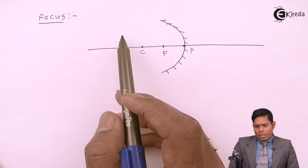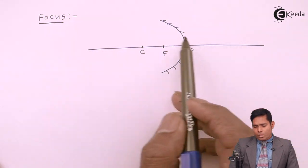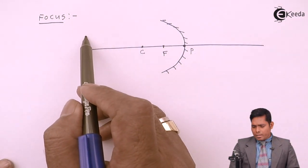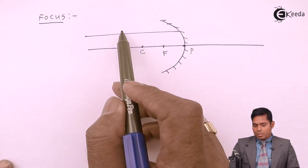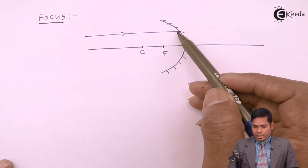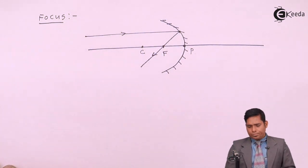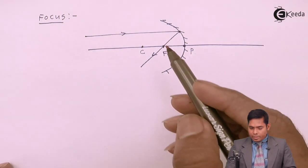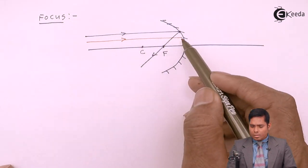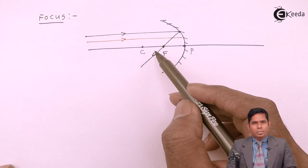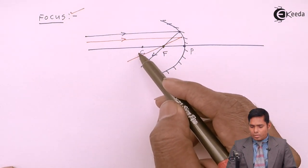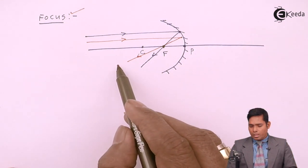In other words, any ray coming parallel to the principal axis — and near to the principal axis, not very far from it — after hitting the mirror, passes through a common point. That point is called the focus. All rays coming parallel to the principal axis after reflection must pass through this common point known as the focus. If I draw another ray parallel to the principal axis from another position, that ray also passes through the same focus point.